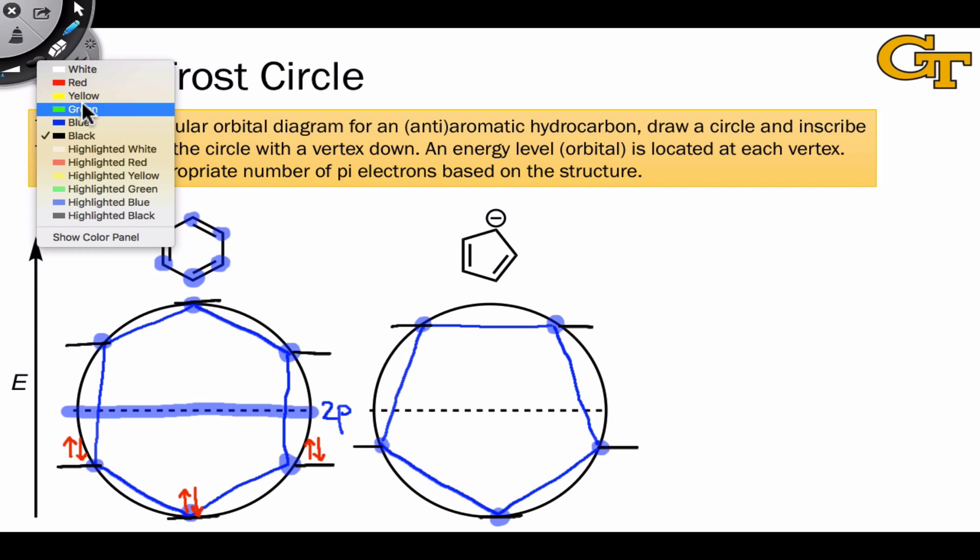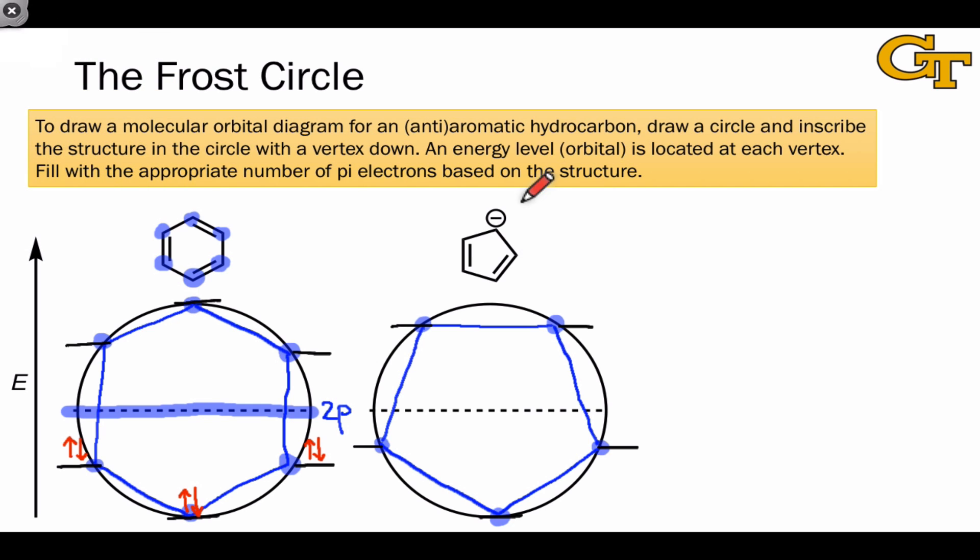Once we've laid those down, we can begin filling with pi electrons. This structure has six pi electrons, two each from the pi bonds and one from this lone pair. And notice here that the molecular orbital energy diagram helps us see why this molecule is aromatic.